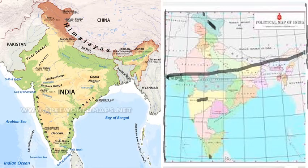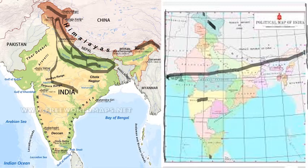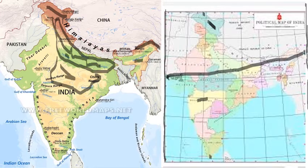Geographically, India is divided into 6 geographical regions. The northern mountain region can be seen here along the top of the map. Below that we have the northern plains — the region through which rivers such as the Brahmaputra, Ganga, and Yamuna flow. This is one of the most fertile regions in the world.